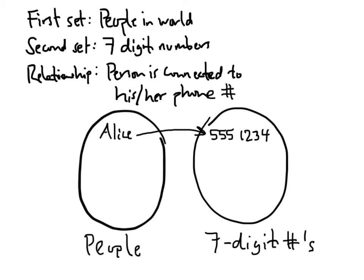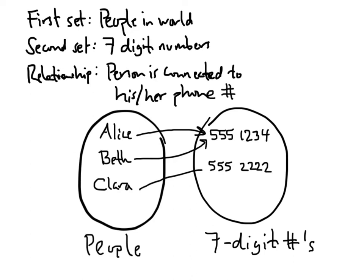Maybe Alice has a sister named Beth who lives in the same house, so Beth has the same phone number. As we discussed, it's okay to have two people with the same phone number. But what about their friend Clara? Clara lives in a different house, so Clara's home phone number might be 555-2222. But Clara also has a cell phone — maybe 555-8764. So Clara has a home phone and a cell phone, like many people do.